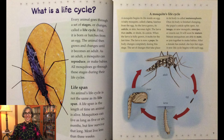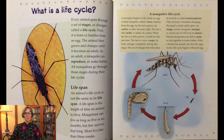Let's take a look at the life cycle of a mosquito. Every animal goes through a set of stages or changes called a life cycle. First it's born or hatches from an egg. The animal then grows and changes until it becomes an adult. As an adult, a mosquito can reproduce or make babies. All mosquitoes go through these stages during their life cycle.